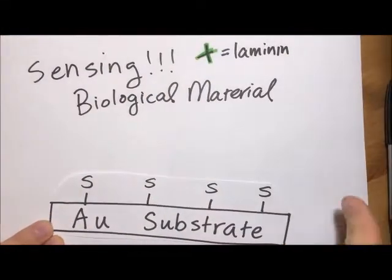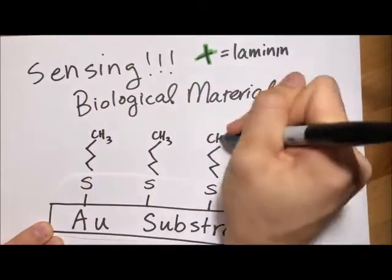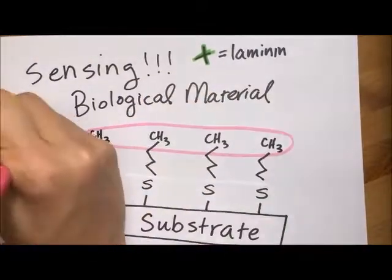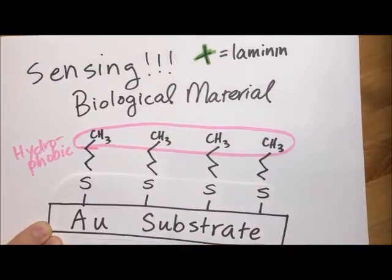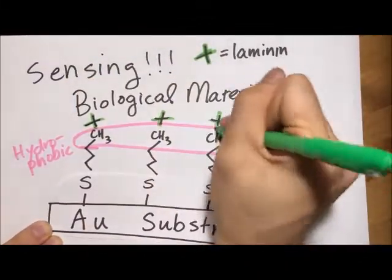For example, by adding methyl groups to the end of the chains, you can create incredibly hydrophobic regions, which attract molecules such as laminin, which is an extracellular matrix protein. This protein helps cells bind to the substrate better, and you can imagine using this to sense various biological cells, such as bacteria.